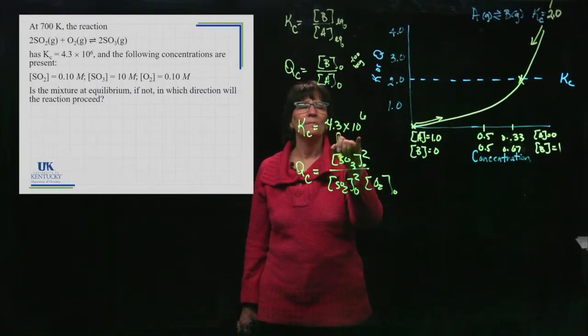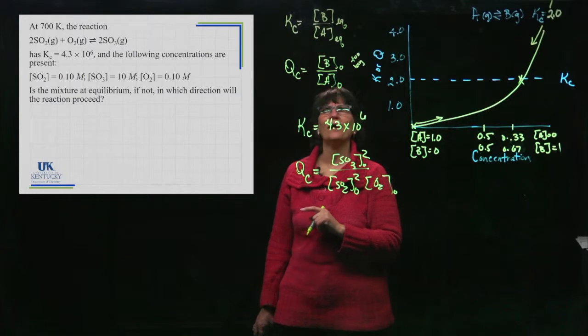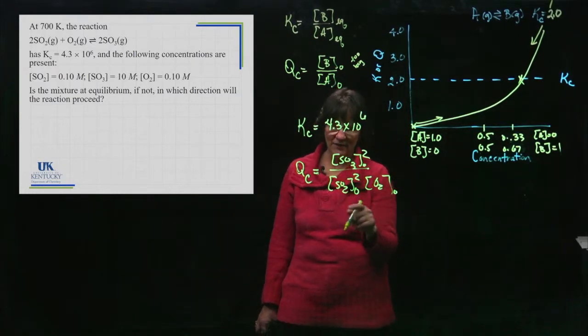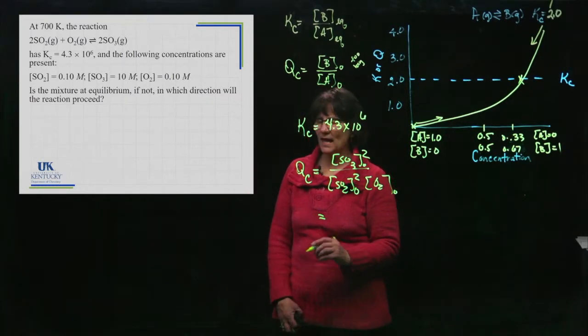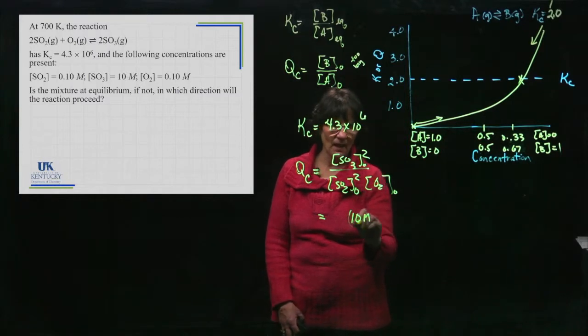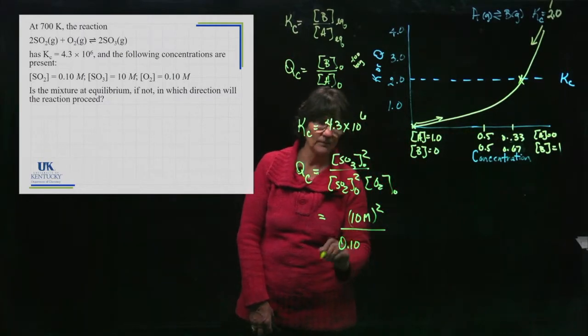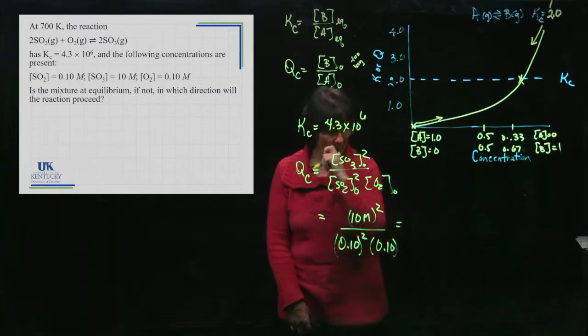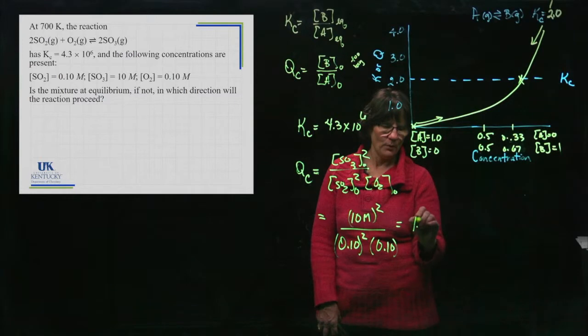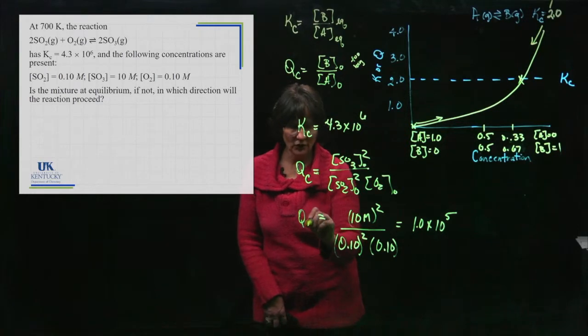That's a very big K. This reaction lies far to the right when it's at equilibrium, and we've got SO3 as my product. We've got way more product than we have the other, but the question is, is it enough? So let's plug in our numbers. SO3's concentration was handed to me on a silver platter. It's 10, and that's going to be squared. SO2's concentration is much smaller. It's 0.1, and that one is also squared. And O2's concentration was also 0.1, and that's going to give me 1.0 times 10 to the fifth as the value of Qc in this case.